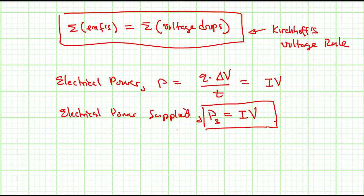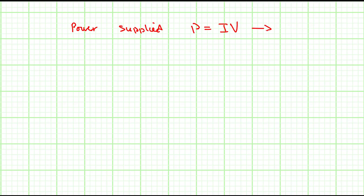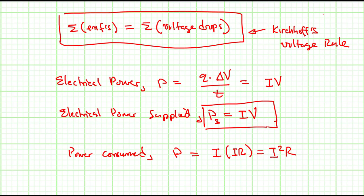If you are asked to calculate the power supplied, use P = IV. The electrical power consumed by the circuit is given by P = I²R, since V = IR from Ohm's law. Note that P = IV implies V = P divided by I. One expression represents power supplied and one represents power consumed.